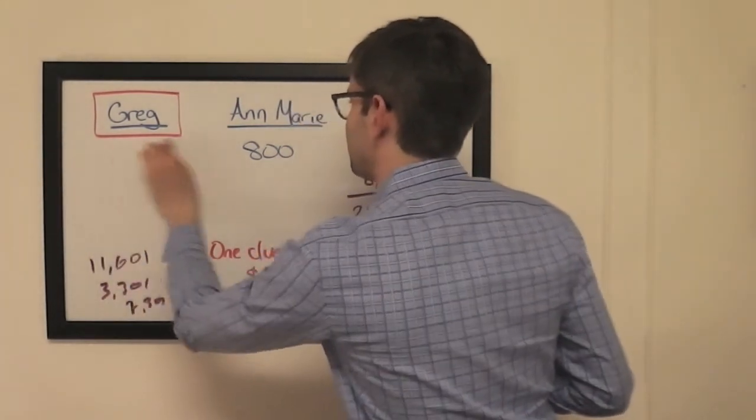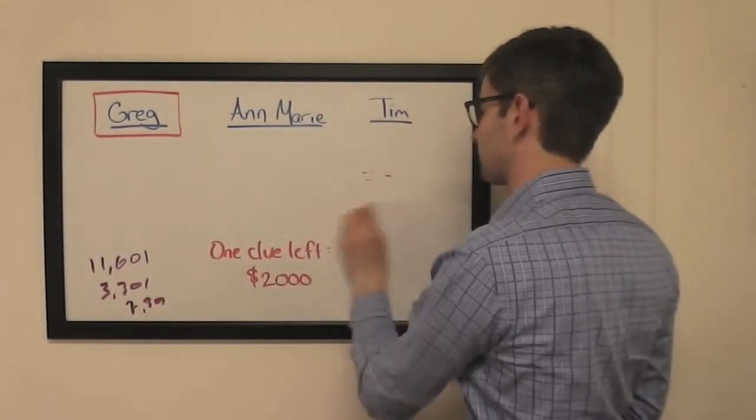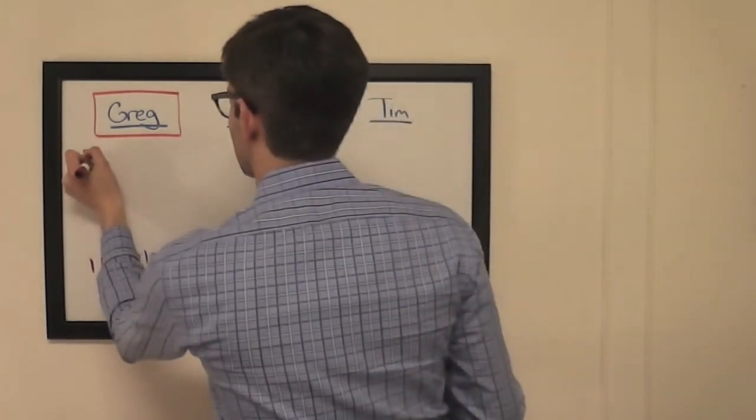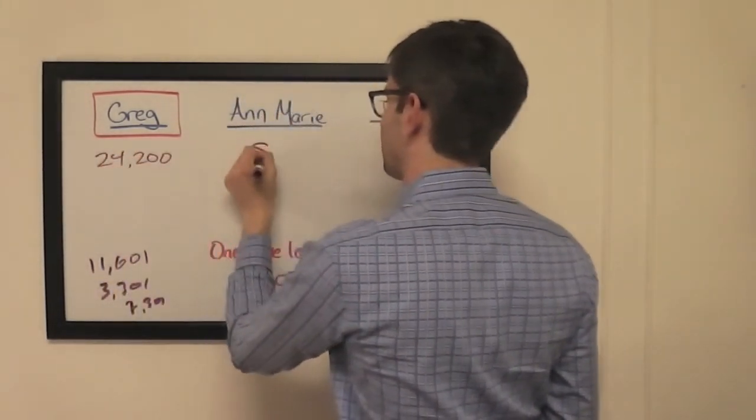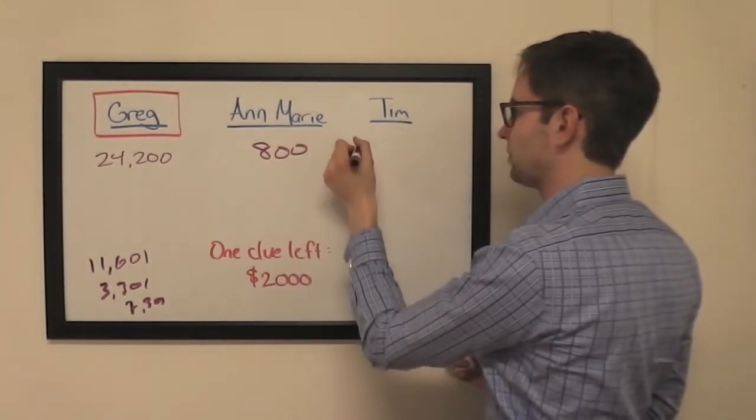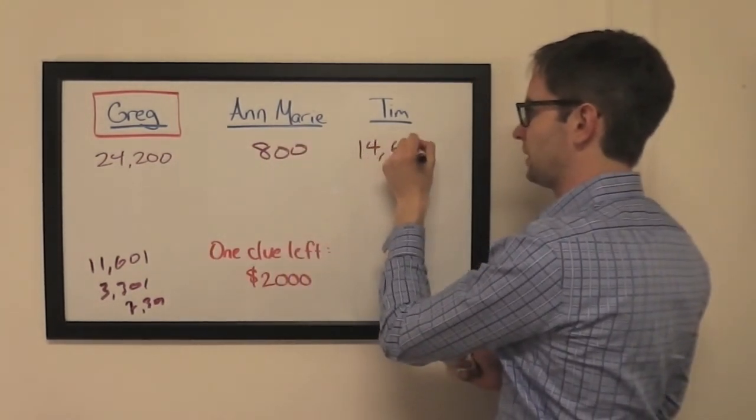As it stood heading into final, Greg had $24,200. Anne-Marie still had $800. And Tim had $14,600.